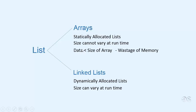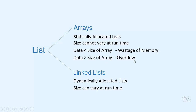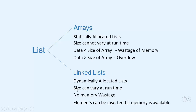In arrays, if the amount of data to be stored at run time is less than the size of the array, then there is wastage of memory. While if the data to be stored is greater than the size of the array, we have an overflow condition and the program does not work properly. In a linked list we don't have any such problem because the size can vary at run time, so we can insert new elements till memory is available.